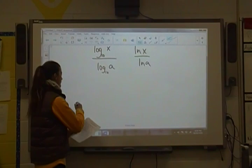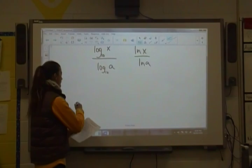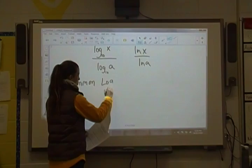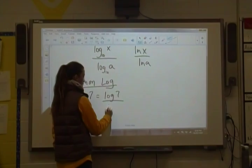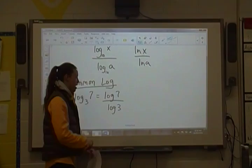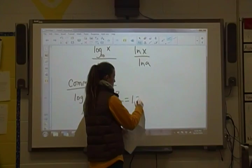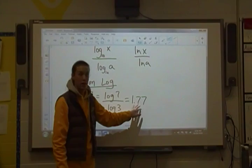So if we do a couple examples, we're going to use common log to start. If I have a log base 3 of 7, and I don't know how to solve this, I'm going to take log of 7 divided by log of 3 because base goes on the bottom. And if I type it in my calculator log of 7 divided by log of 3, I get something pretty close to 1.77. And that's it. So you can always check yourself. 3 to the 1.77 power is about 7. It's not going to be perfect but it's going to be pretty close.